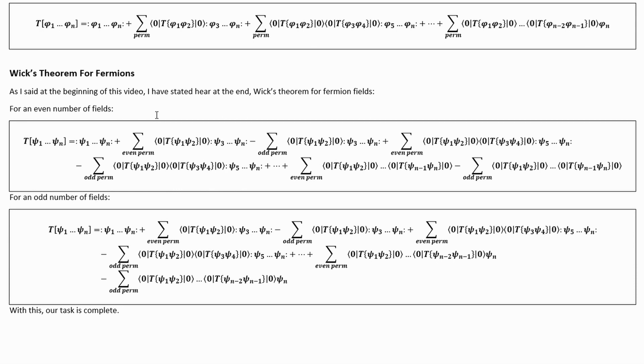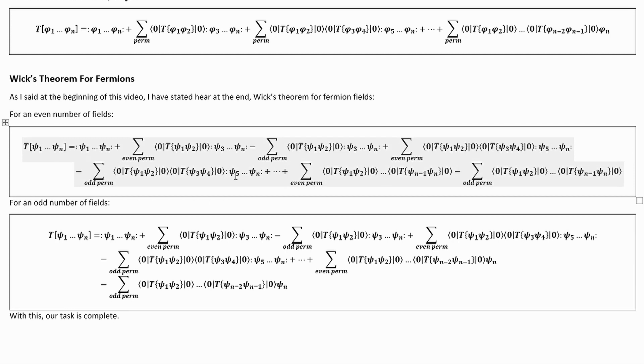Then, at the beginning of the video, of course, I said I would show you the fermion result. This is the fermion case for an even number of fields, and this is the fermion case for an odd number of fields. And that's about it.